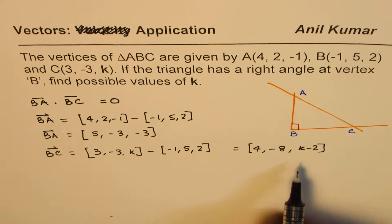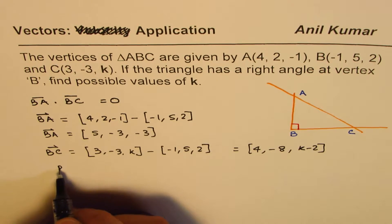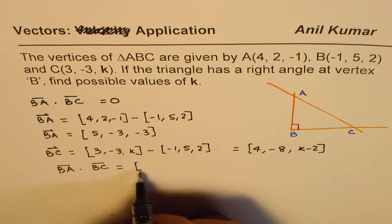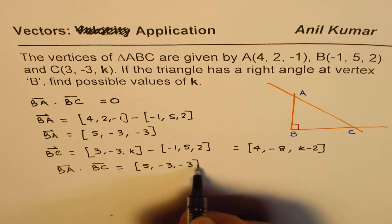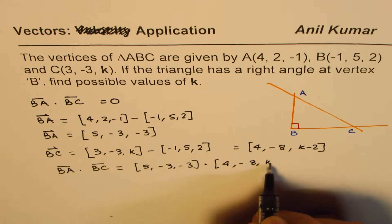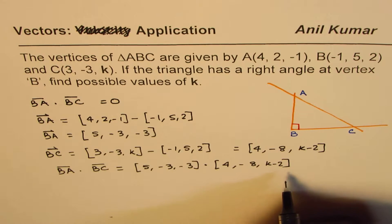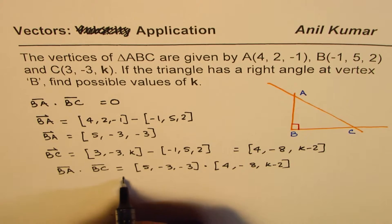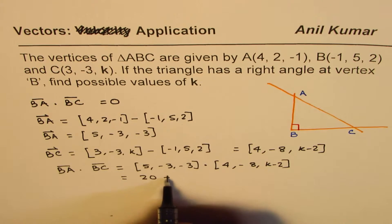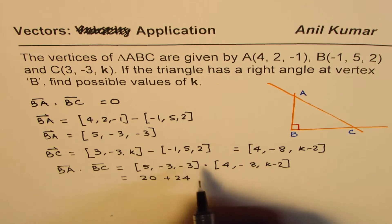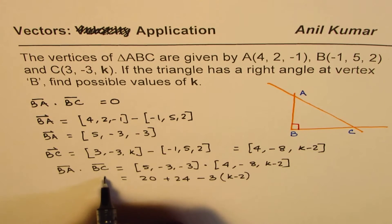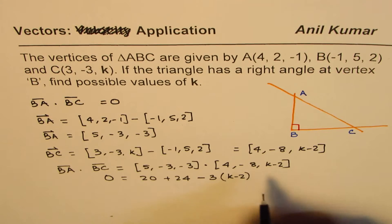Now we can find the dot product. BA dot BC equals (5, -3, -3) dot (4, -8, K-2). Let's calculate: 5 times 4 is 20, minus 3 times -8 is plus 24, and then minus 3 times (K minus 2). We equate this to 0.